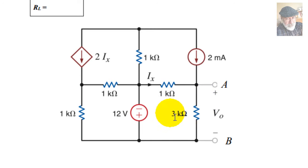So the first thing we need to do, of course, is remove this 3kΩ resistor because it's not part of the circuit for which we need to find the Thevenin equivalent. Let's do that.